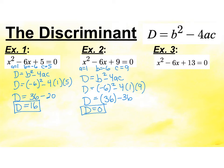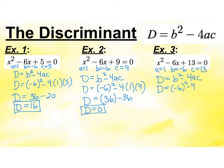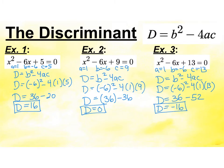On example 3, a is 1, b is negative 6, and c is positive 13. Write out my formula and substitute in my values: negative 6 squared minus 4 times 1 times 13. d equals 36 minus 52, so d equals negative 16. So I have some different-looking answers: positive 16, a 0, and a negative 16.